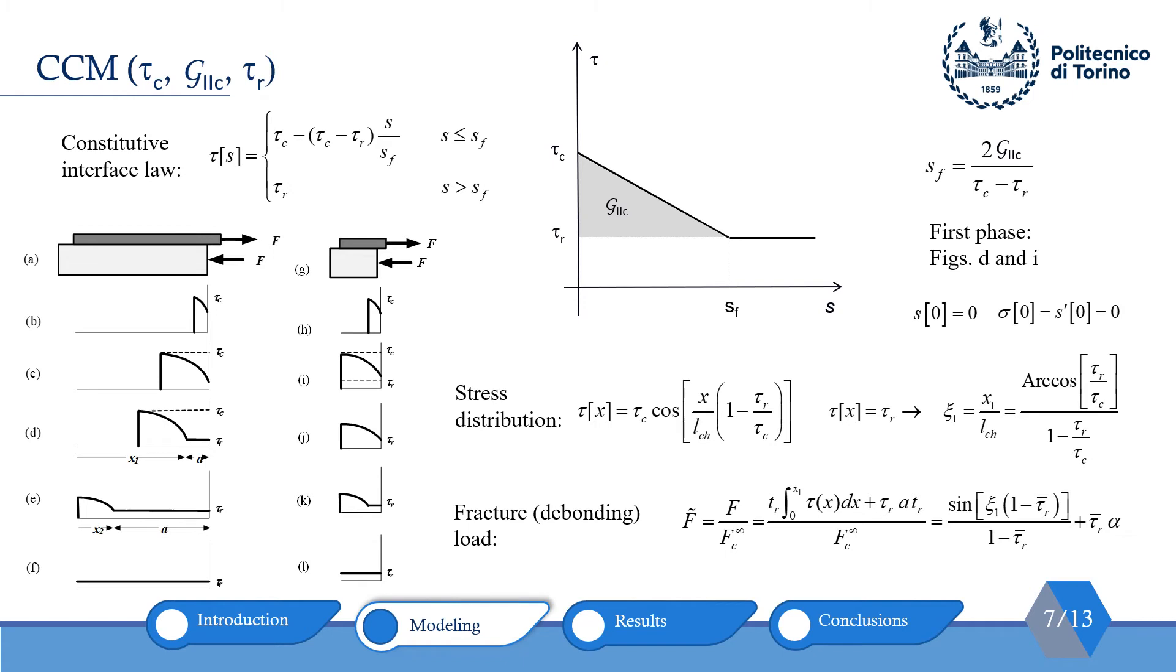For modeling the first phase, we have traction-free and no slip boundary condition at free end or x equal to 0. So, using the equation that tau(x) equal to tau_r, we can calculate the x1 and then lambda which represents the debonding length. Finally, the load can be calculated using the integral of the stress distribution along the interface.